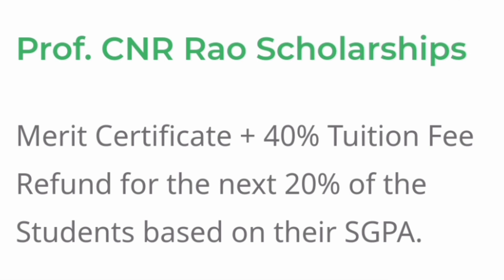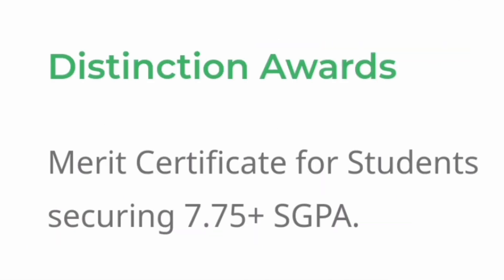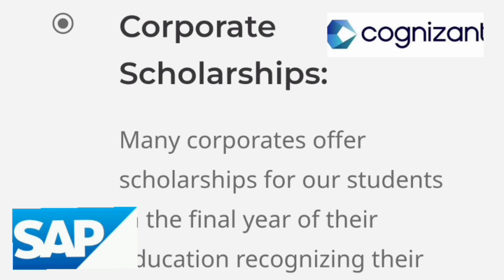So you should aim to be in the top 5 percent for the 50 percent tuition fee waiver, or within the next 20 percent for the 40 percent tuition waiver — both are achievable if you study well. There is also a Distinction Award: if you maintain a CGPA of 7.75, you receive an award certificate you can mention in your CV when applying for jobs. Additionally, there are corporate scholarships based on student performance.